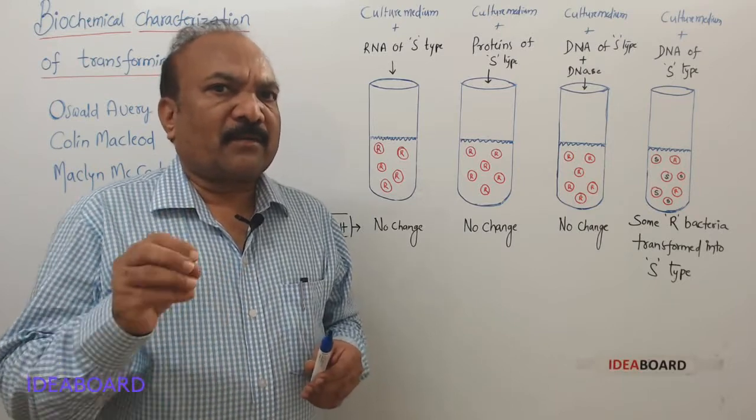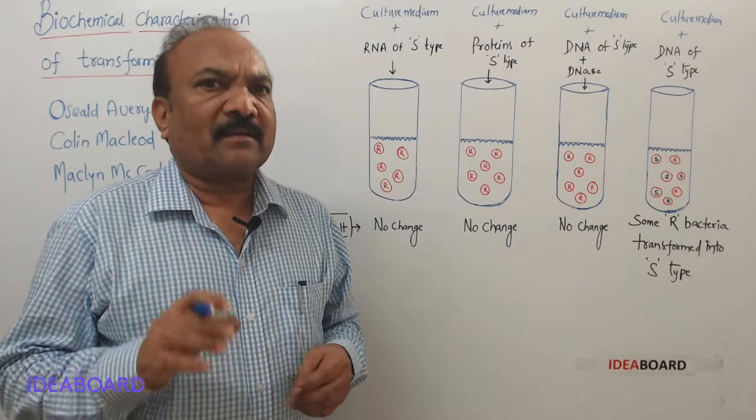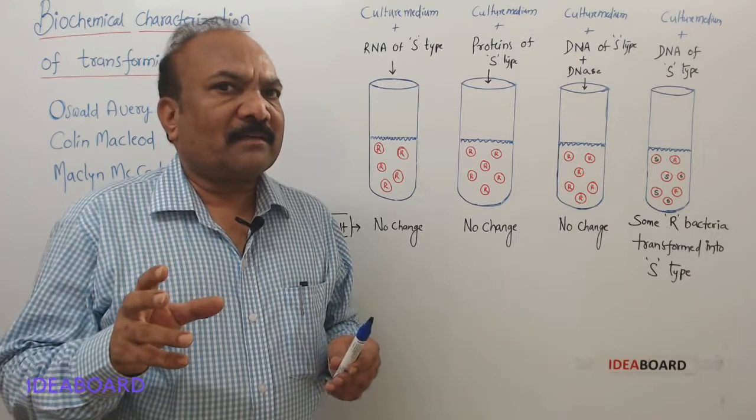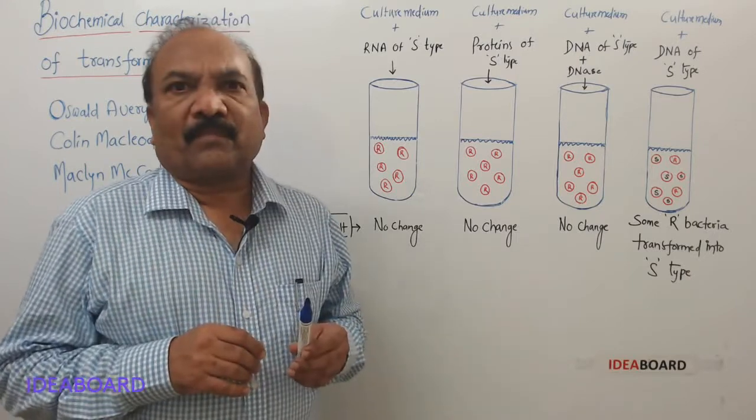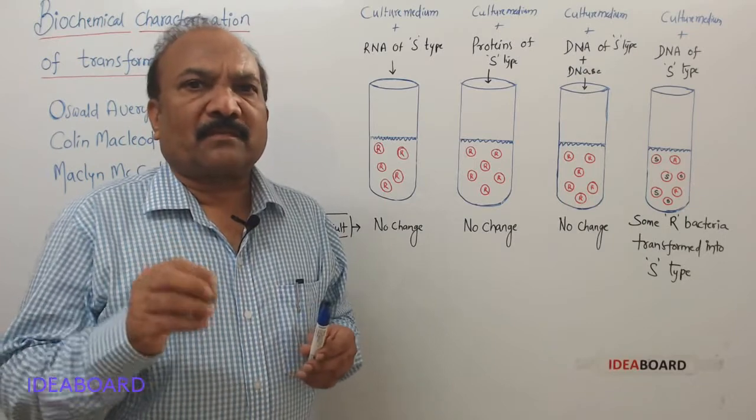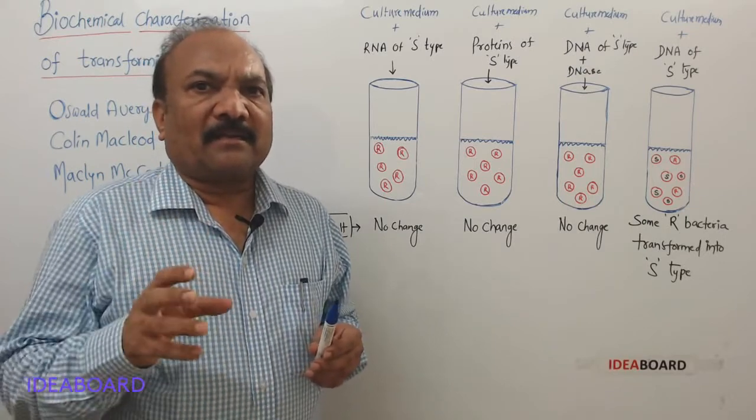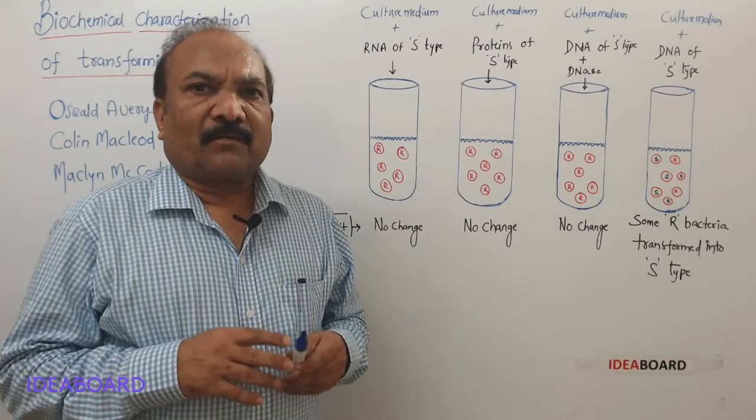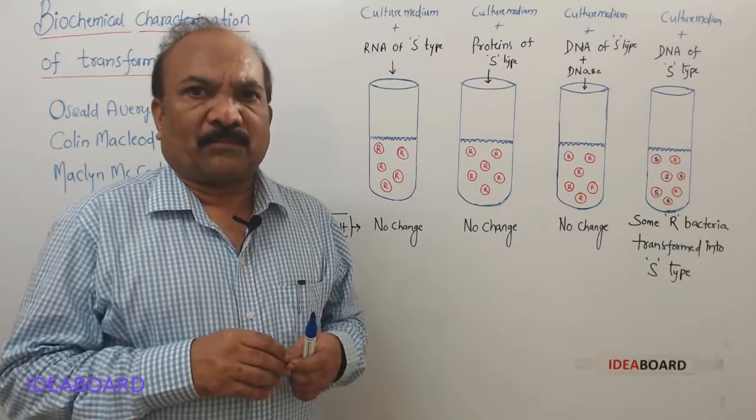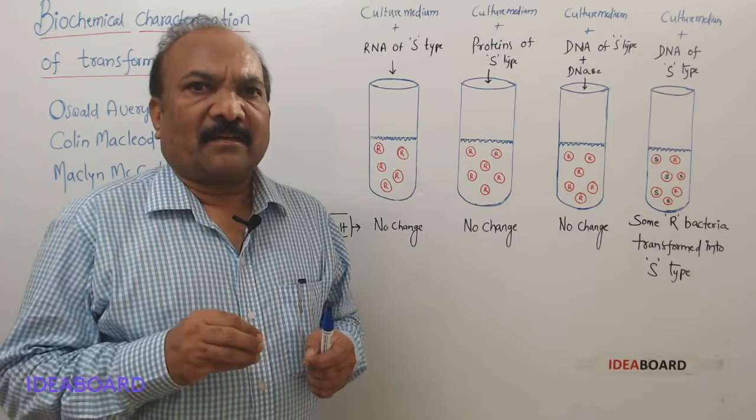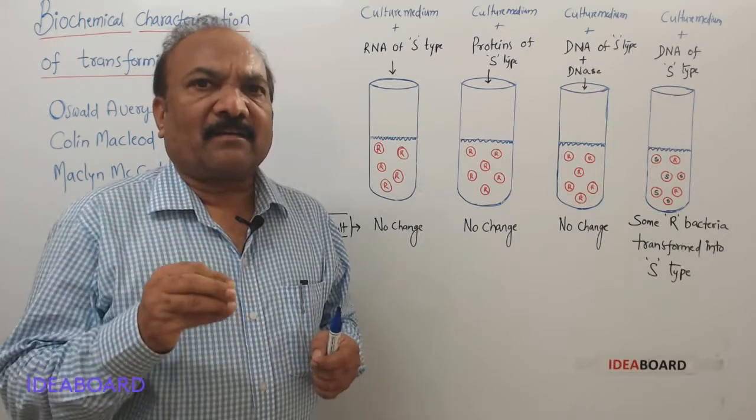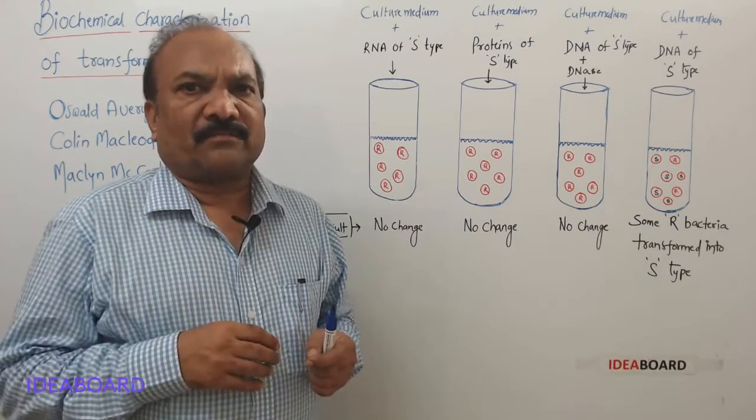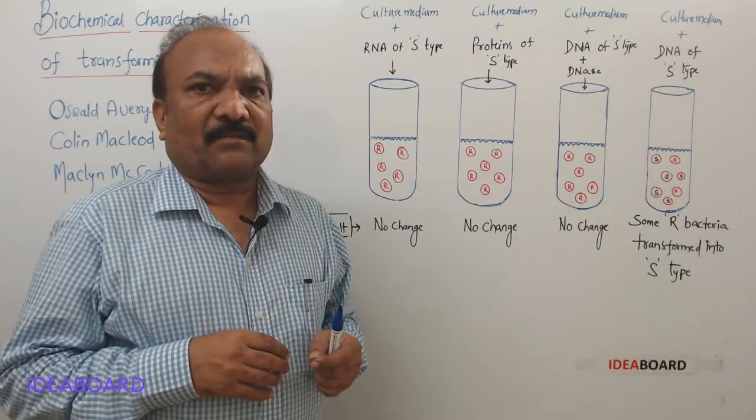Transformation experiments were conducted by Frederick Griffith, and he has used this bacterium: Streptococcus pneumoniae. He identified two strains in these bacteria, S strain and R strain. S cells are virulent or disease-causing, whereas R cells are non-infectious. They do not cause any disease, so they are harmless.